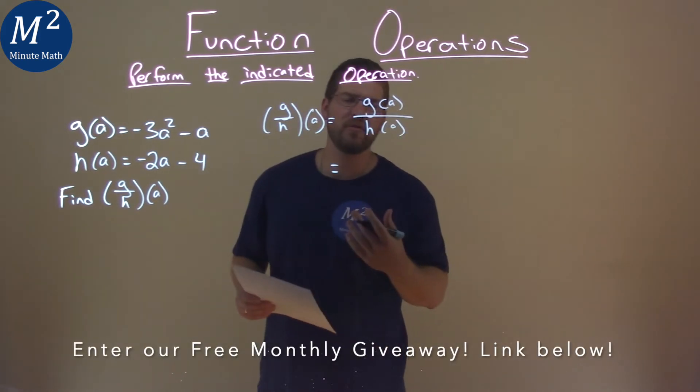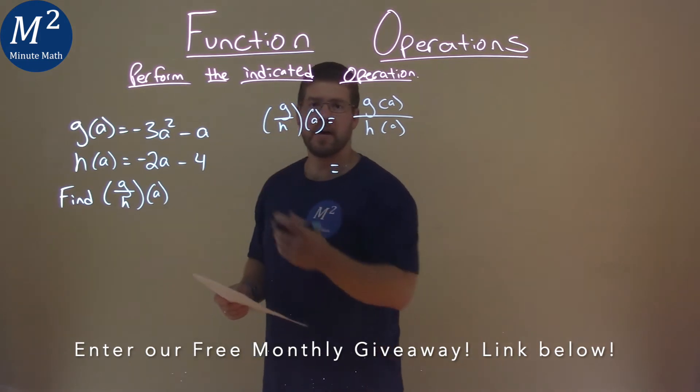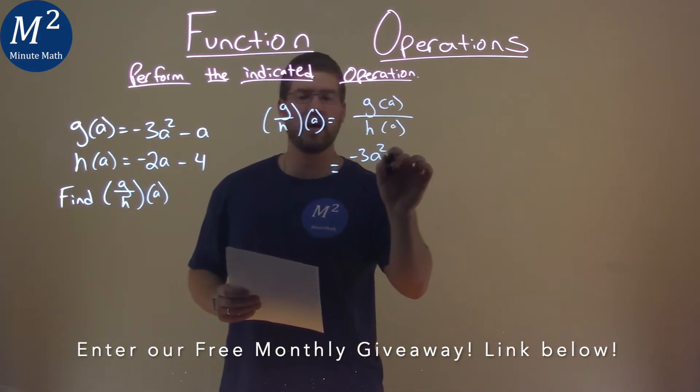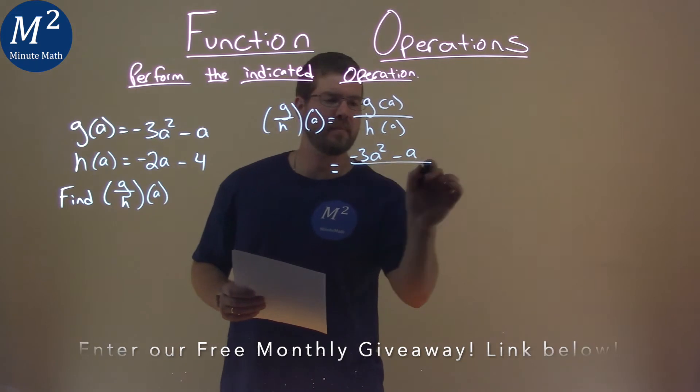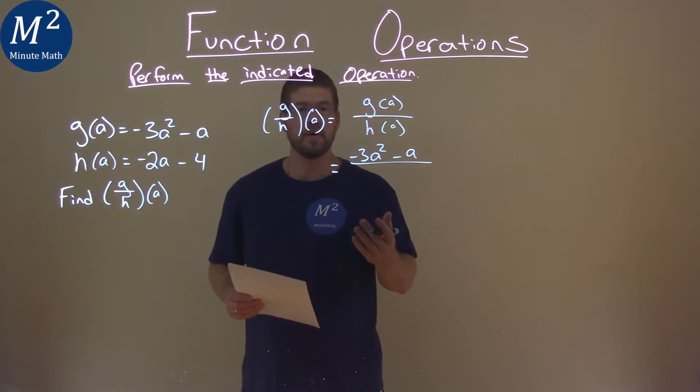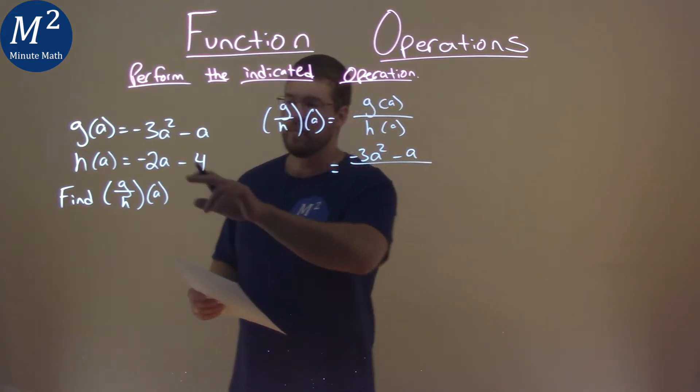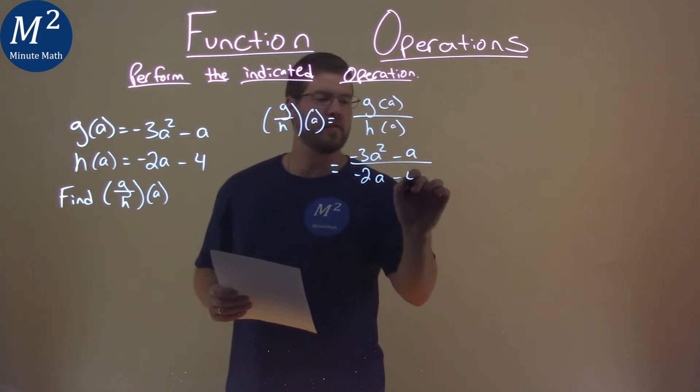So we need to substitute what we know in. g of a was given to us, negative 3a squared minus a, and that's on top of h of a, h of a being negative 2a minus 4.